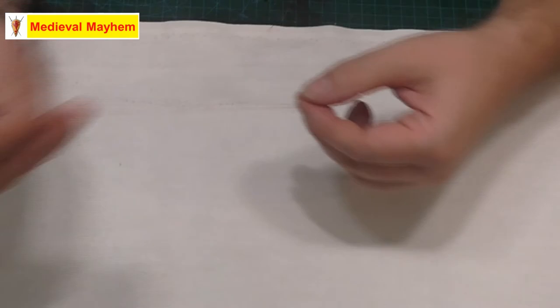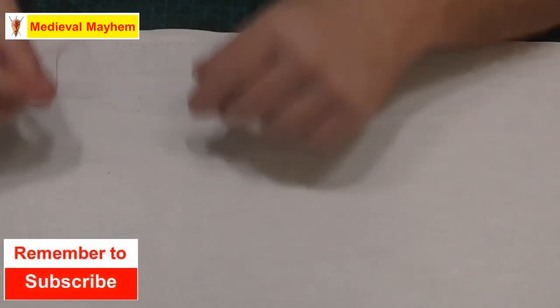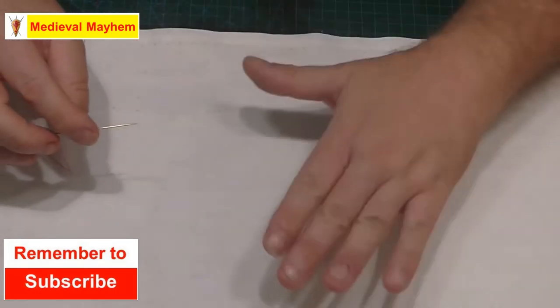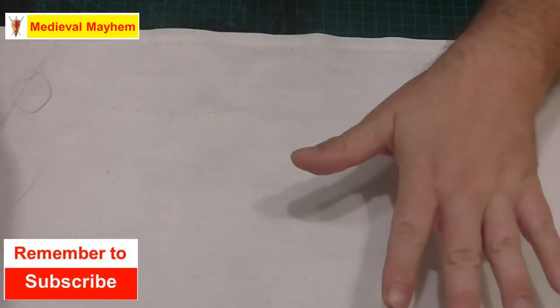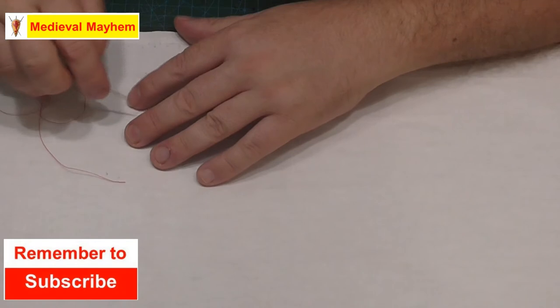For the running backstitch, the first thing I'm going to do is start with a small knot at the end of my thread. That's probably a little bit big but there we go. For tutorial purposes this is fine. Now today I'm just using a very basic plain coarse linen with a linen thread.